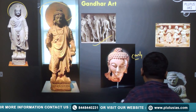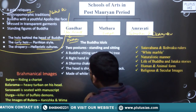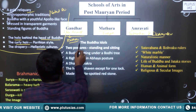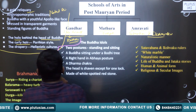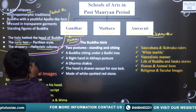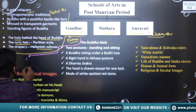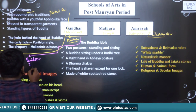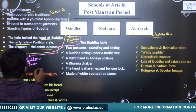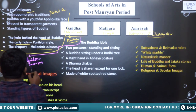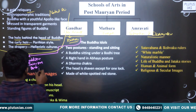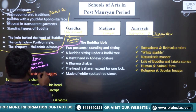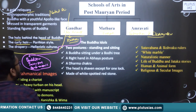Now we will see Mathura art. Mathura art is divided into three parts — it covers three important religions. Religion one is Buddhism, then we have Jainism, and then Brahmanical tradition is also found. Hindu gods are also found in the Mathura art.